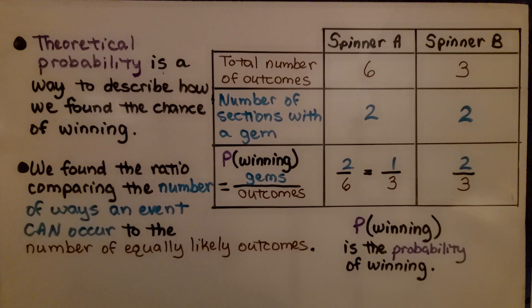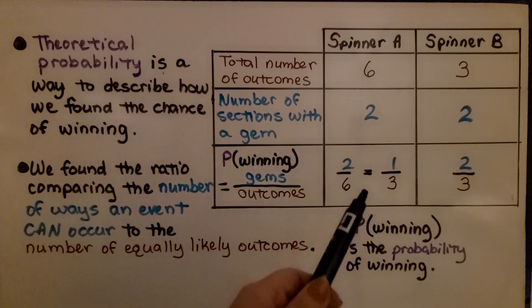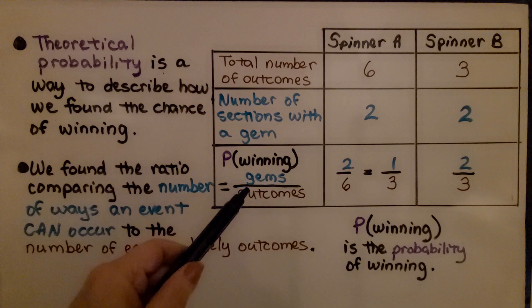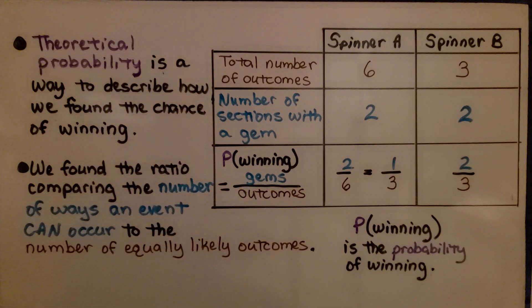Now, what if the way to win was to not point to a section with a gem? Which spinner would be the best choice? Well, if we don't want it to point to a gem, we would choose spinner A. It has a two-thirds chance that we won't land on a gem. Not pointing to a section with a gem would be the complement to this event. It would be not pointing to a gem.